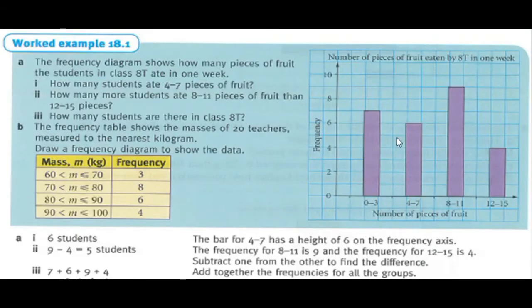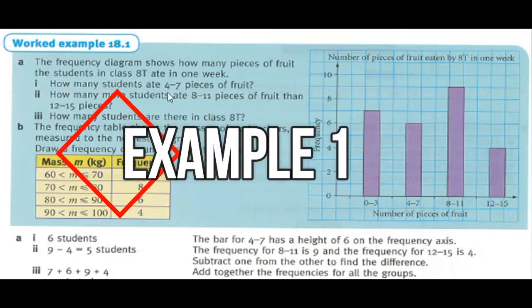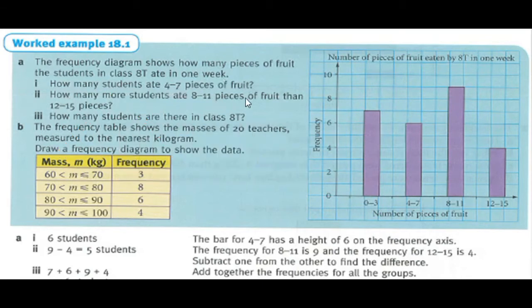Okay, now here we will have a discrete graph. First question is question number 18.1 example Part A: How many students eat four to seven pieces of food? Four to seven, that is six. So what we will write here: six students.